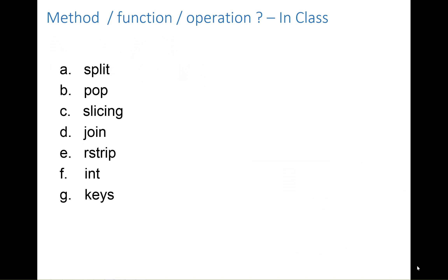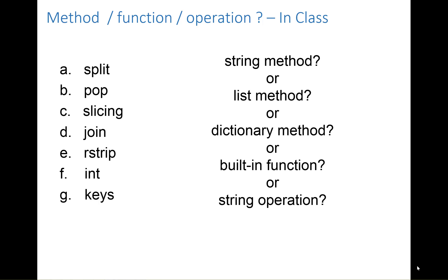For file I/O you often need to use some built-in functions, some string, list, and file methods, and some operations. So it's worthwhile to review this terminology with some examples. Can you identify which of the items on the left are string methods, list methods, dictionary methods, built-in functions, string operations, or list operations? Take a moment to jot down your responses. Some of these will have more than one utility.